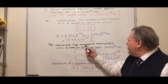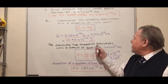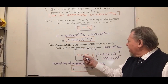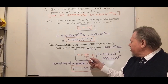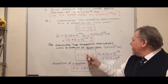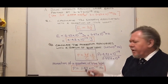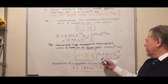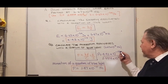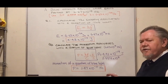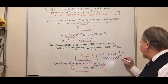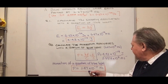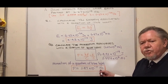Question two: calculate the momentum associated with a quantum of blue light at 6.67 × 10¹⁴ Hz. Momentum equals Planck's constant times frequency over the speed of light, which is energy over c: p = hf/c = E/c. We already calculated the energy as 4.42 × 10⁻¹⁹ J. Dividing by 2.9979 × 10⁸ m/s, the momentum of a quantum of blue light is 1.47 × 10⁻²⁷ N·s.